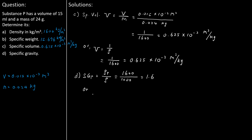Alternatively, we can find the specific gravity of substance P, SG sub P, using specific weights. The specific gravity of substance P equals the specific weight of substance P, gamma sub P, divided by the specific weight of water, which is 15,696 divided by 1,000 times 9.81, and that gives the specific gravity of substance P equals 1.6.